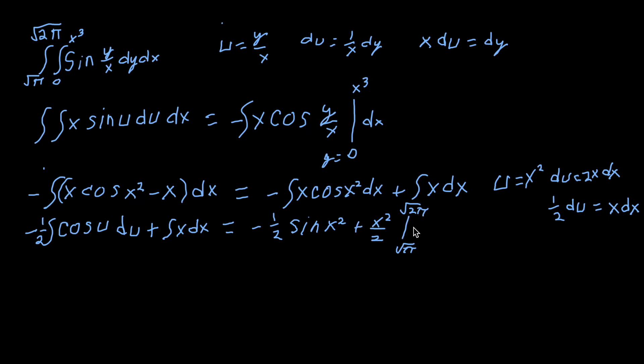We'll now put the two points into our equation. And so this will become negative 1/2 sine. We'll plug in the square root of 2 pi into the x squared, so that will become 2 pi. Plus x squared here will become pi. I'm sorry, it'll be 2 pi over 2.